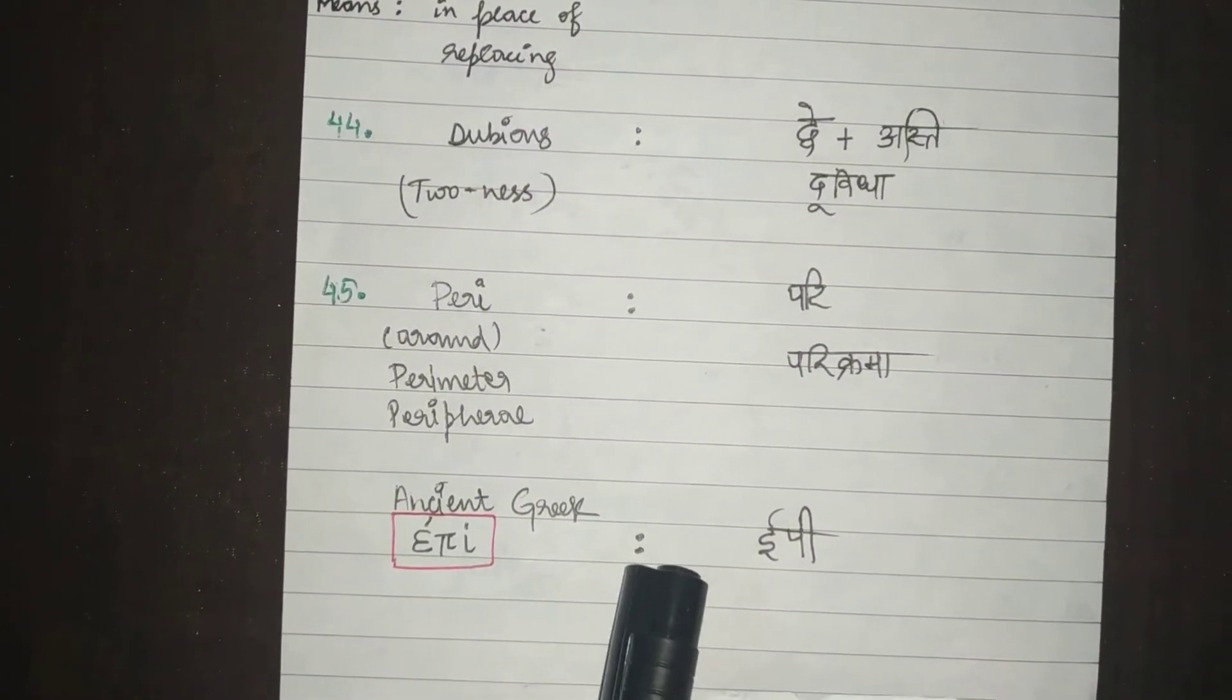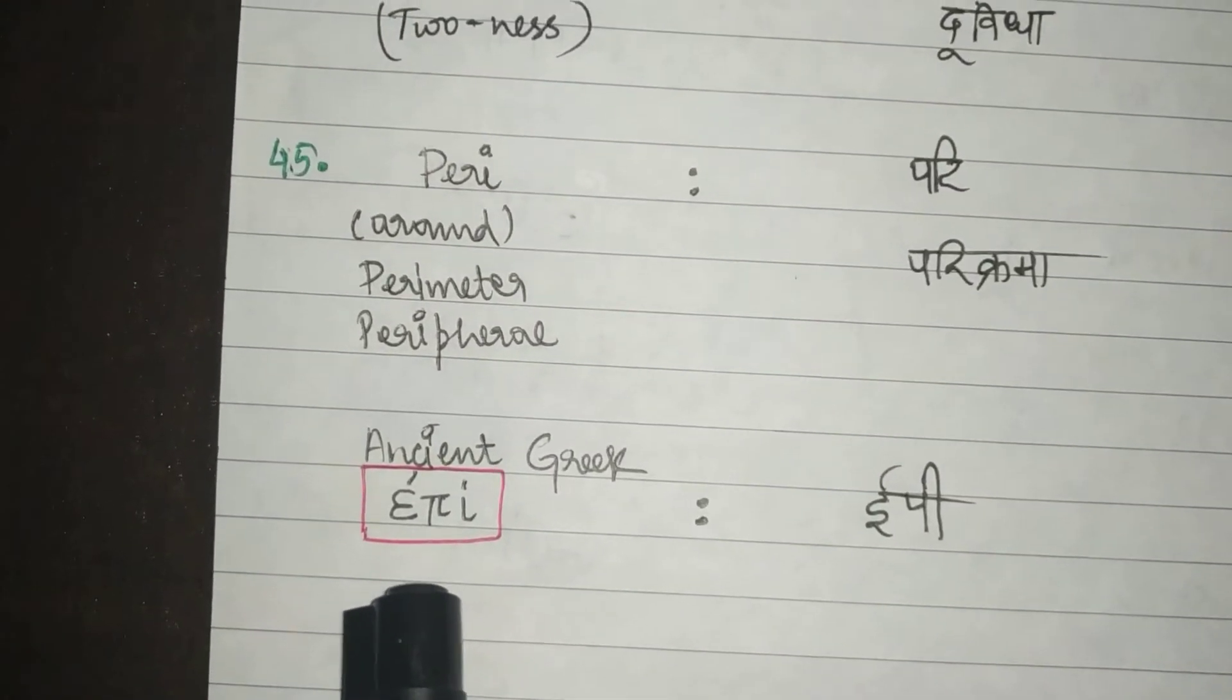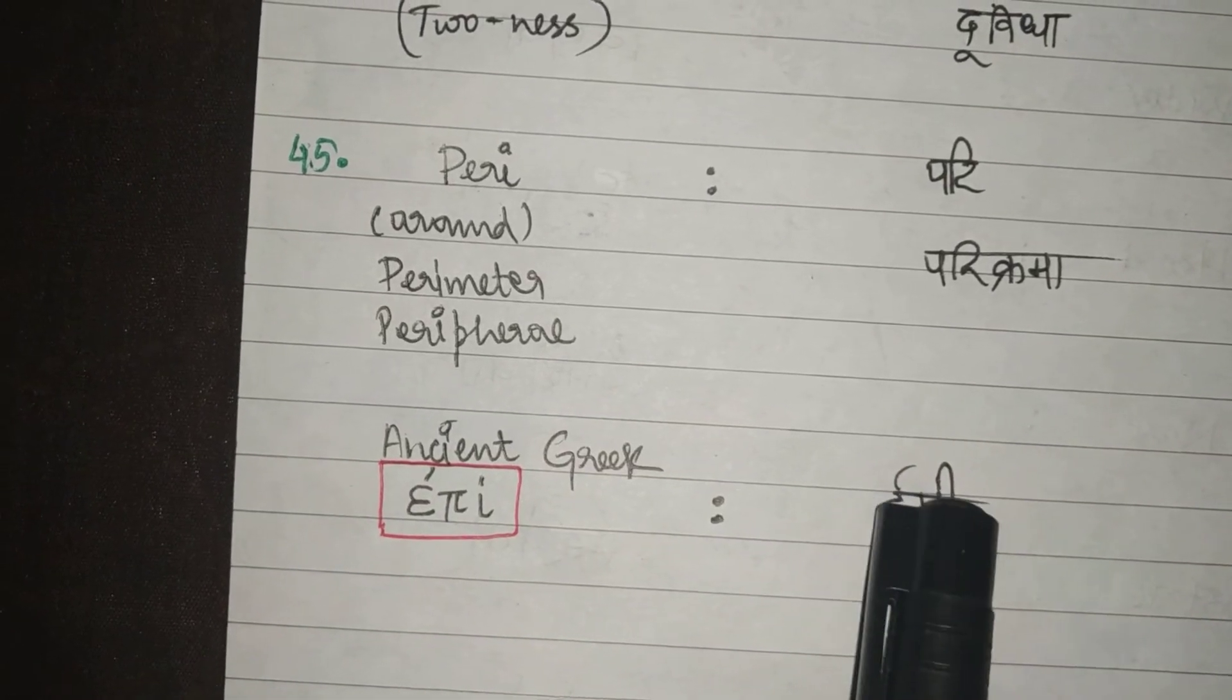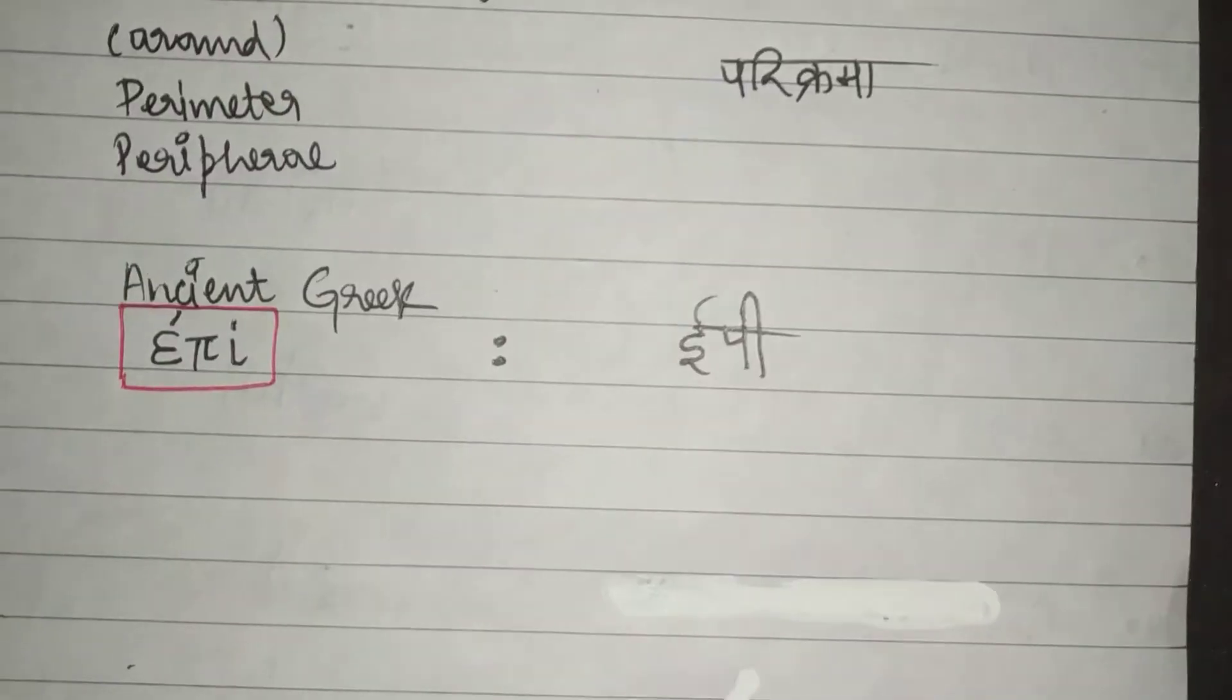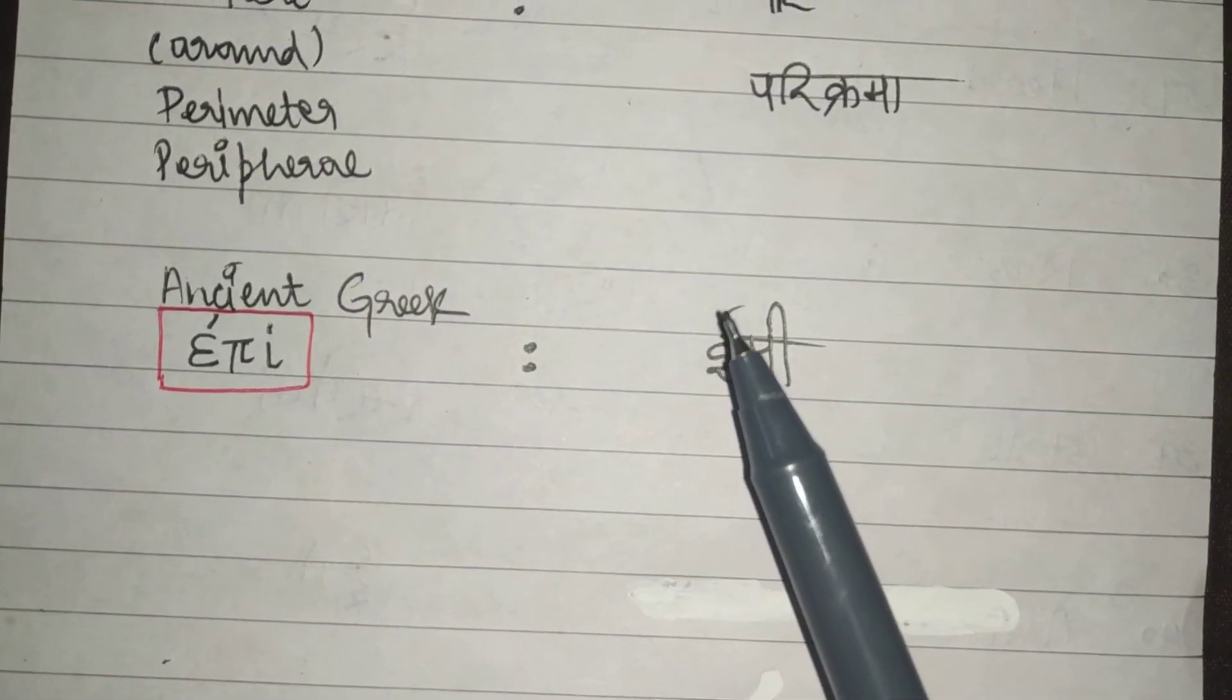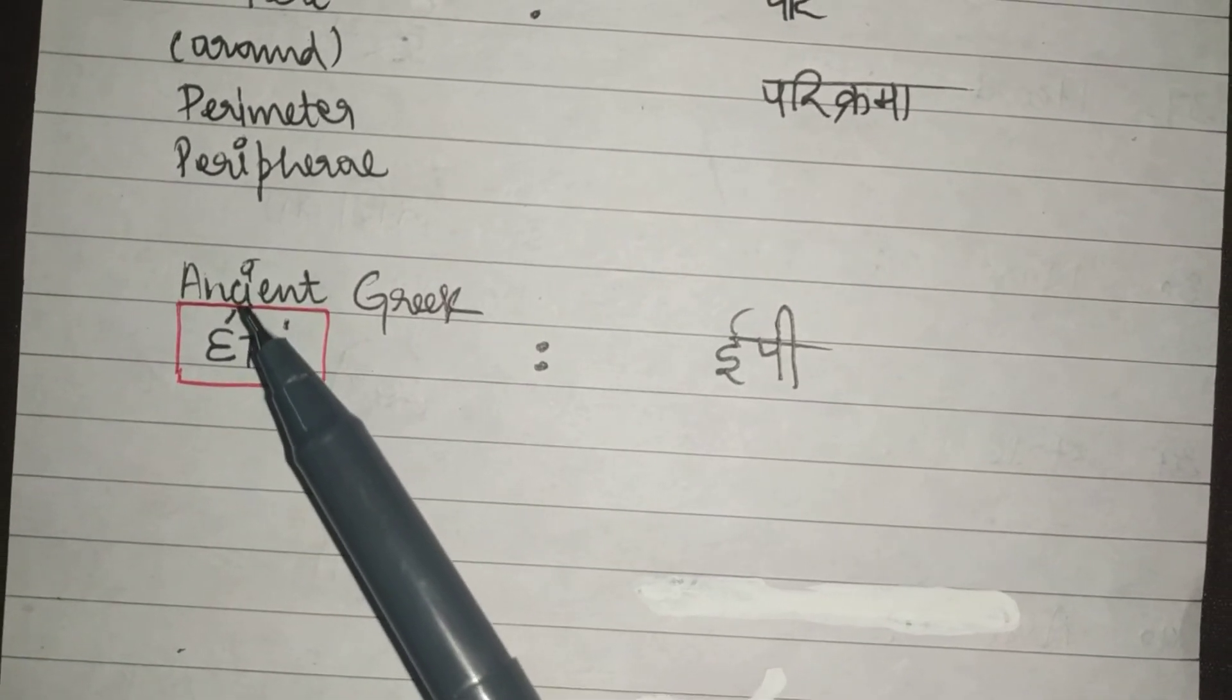One more observation I made is that in ancient Greek, E was written something like this. Now, this is quite similar to E written here. In fact, what we call the Badi E ki Matra also is found here in the ancient Greek.